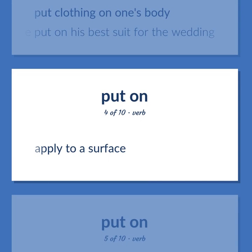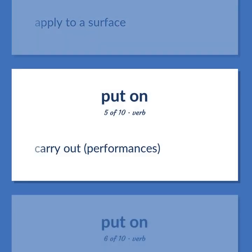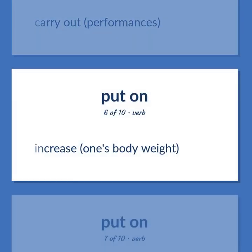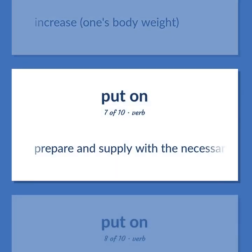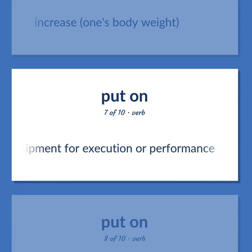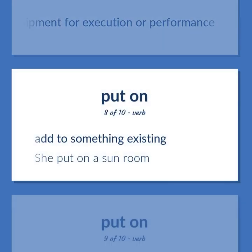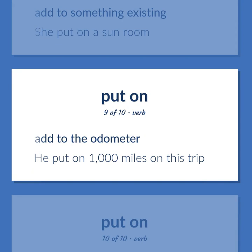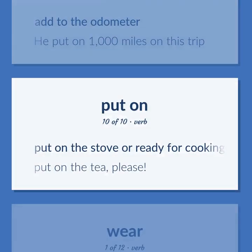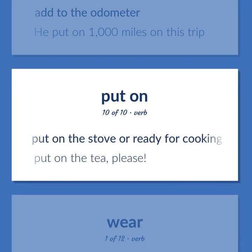Put on: apply to a surface. Carry out performances. Increase one's body weight. Prepare and supply with the necessary equipment for execution or performance. Add to something existing. Example: She put on a sunroom. Add to the odometer. Example: He put on 1,000 miles on this trip. Put on the stove or ready for cooking. Example: Put on the tea, please.